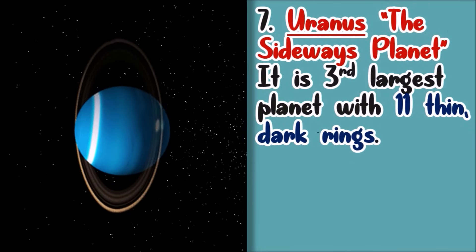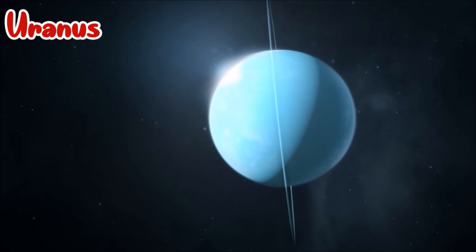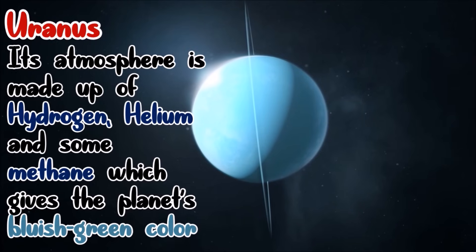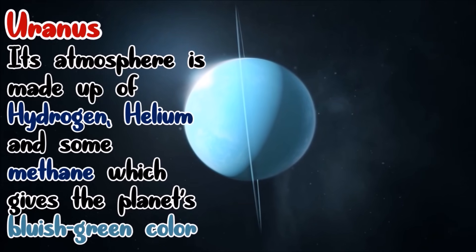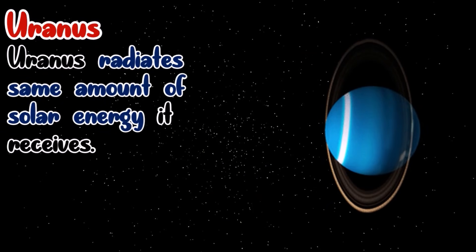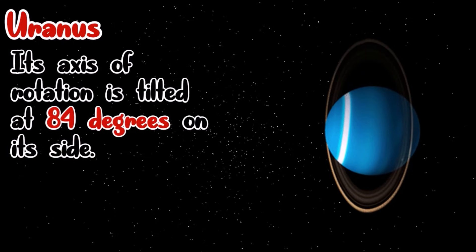Uranus is the third largest planet with a system of 11 thin, dark rings. Its atmosphere is made up of hydrogen, helium, and some methane, which gives the planet a bluish-green color. Uranus radiates the same amount of solar energy it receives. Uranus's axis of rotation is tilted at 84 degrees on its side. The result is, its North Pole faces the Sun for one-half of 84 years' revolution.